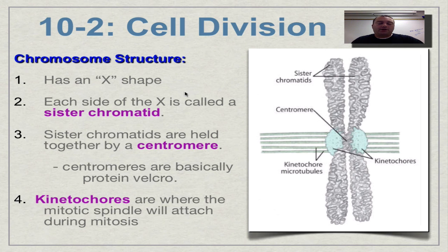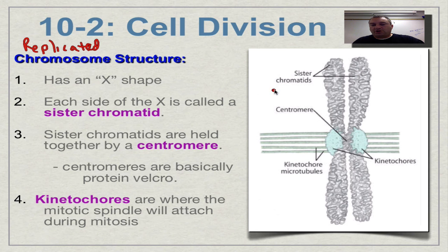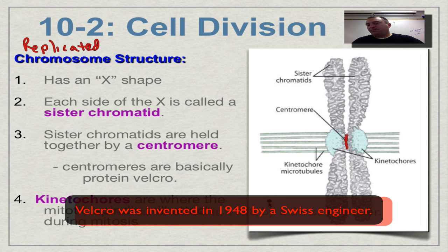Let's look at that X shape properly. This is a replicated chromosome — it's gone through DNA replication. One side is one copy, the other side is the other copy. Each half of the X is called a sister chromatid. They're called sisters because they're clones — exactly the same. They're held together by a centromere, which is basically protein Velcro that allows the sister chromatids to stick together.